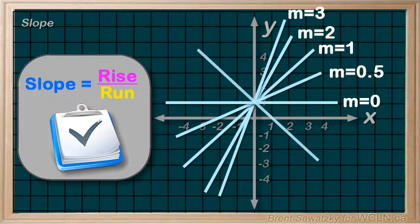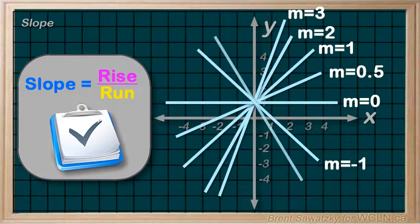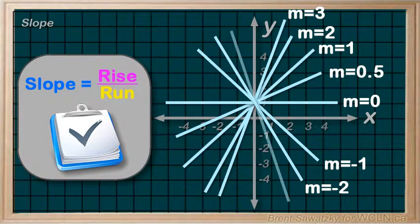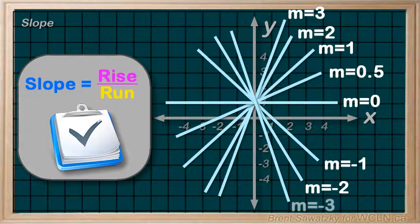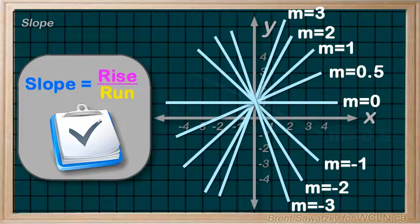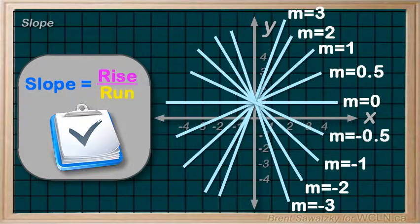Heading downwards, we have a slope of -1. And this one has a larger negative slope, that is, it's steeper in the negative direction, dropping as it goes to the right. m = -2. And steeper yet, m = -3. Now where would m = -1/2 fit in? Well, right here. It has a more gradual negative slope.